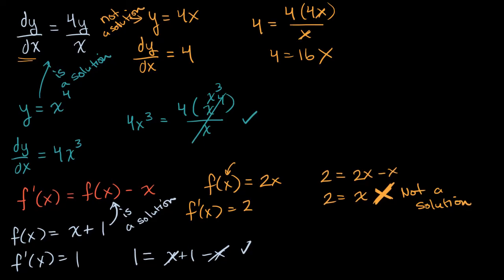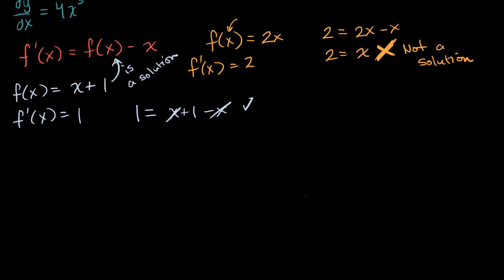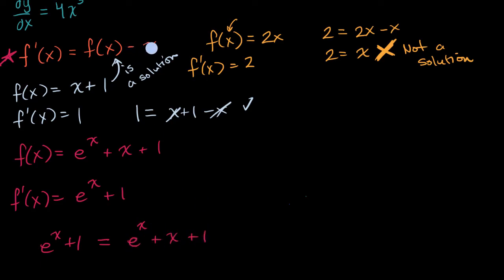Let's do a few more. Let me scroll down for more space, making sure we can see our original differential equation. Let's test whether f of x equals e to the x plus x plus one is a solution. F prime of x equals e to the x plus one — the derivative of e to the x is e to the x, which is always amazing, plus one, and the derivative of the constant term is zero. Substituting: is e to the x plus one equal to f of x minus x, which is e to the x plus x plus one minus x? The x cancels out, and they are indeed equal. So this is also a solution.